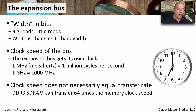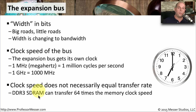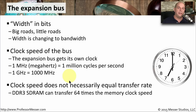You would think that one clock cycle would equal one transfer of information, but there are techniques that allow us to transfer more than one piece of information on a single clock cycle. Take, for example, DDR3 SDRAM — the memory inside of our computer. It can transfer 64 times the amount of the memory clock speed. So although the clock on the memory is going at a certain rate, we can increase the amount of data transferred through various techniques to achieve 64 times what that clock speed might actually be.